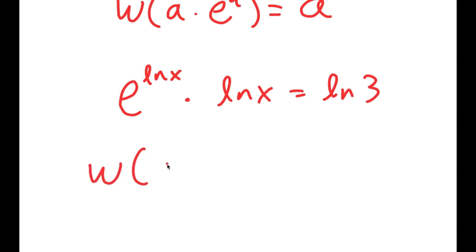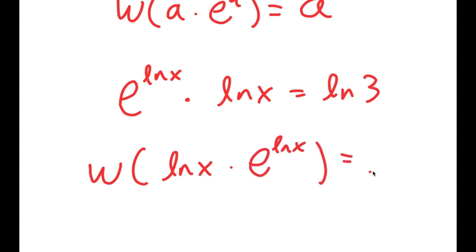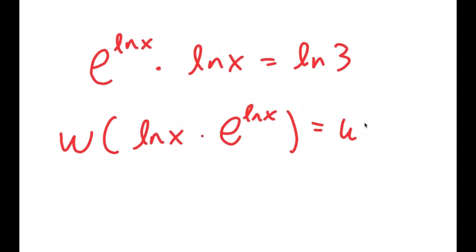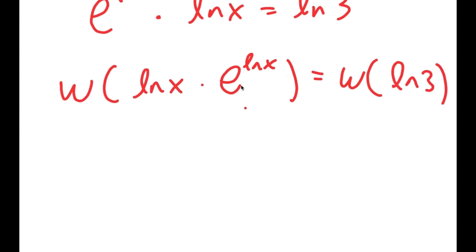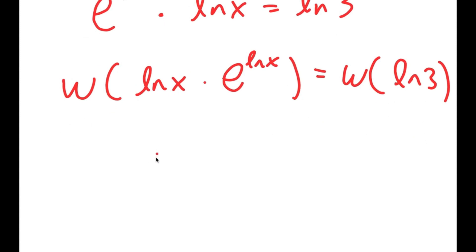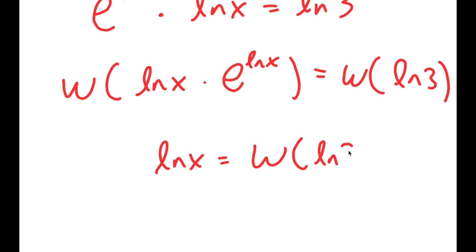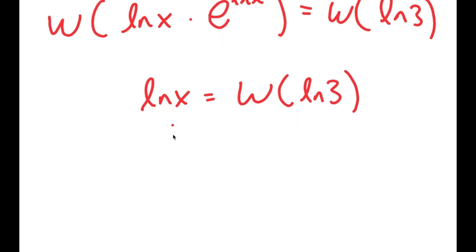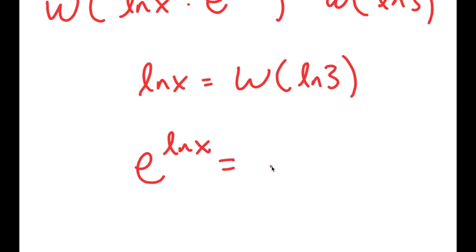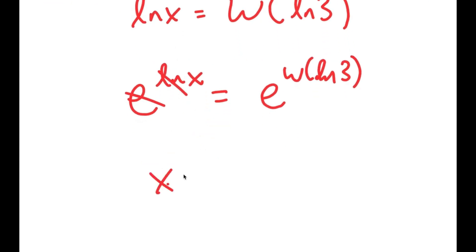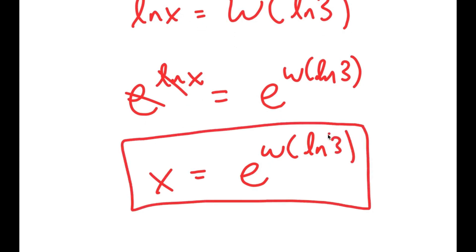If I take the Lambert W function on both sides, I get W of ln x times e to the power of ln x is equal to W of ln 3. And this left side is just equal to a, so I'm left with ln of x is equal to W of ln 3. Now I want to get rid of this ln, so I'm going to take e to the power of both sides. Since e to the power of ln cancel out, I get x is equal to e to the power of W of ln 3. So this is my answer to this equation.